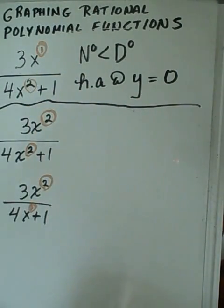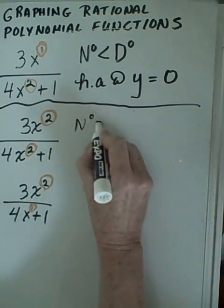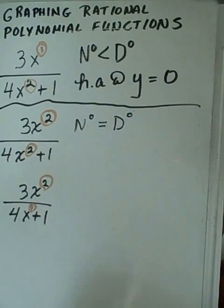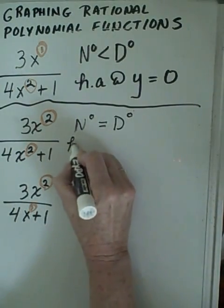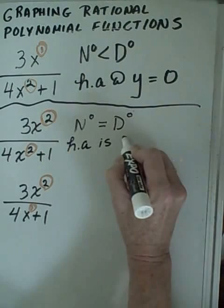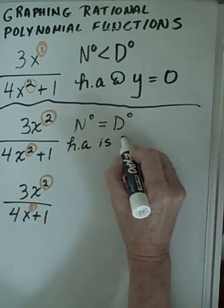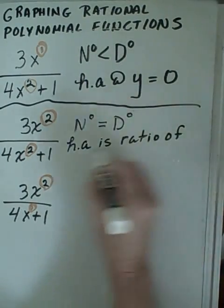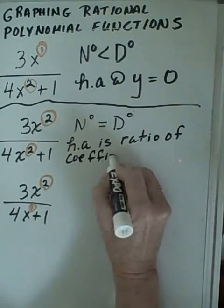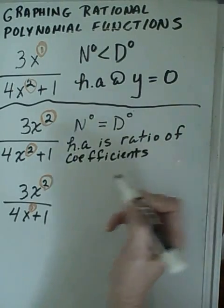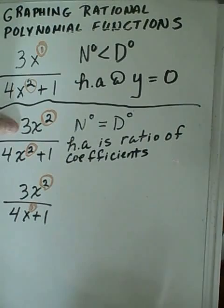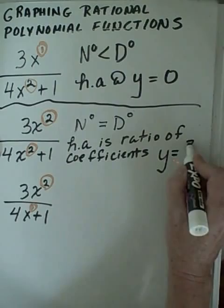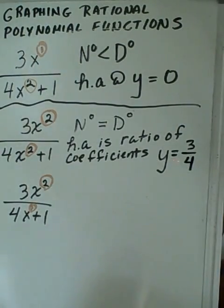Our second example: the degree of the numerator is equal to the degree of our denominator. If that's the case, then our horizontal asymptote is at the ratio of the coefficients, or the leading coefficients. In this case, the leading coefficient is three, and this one is four, so we would have a horizontal asymptote at y equals three-fourths.